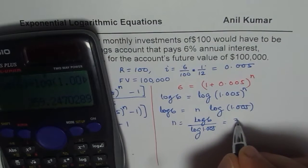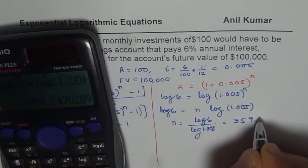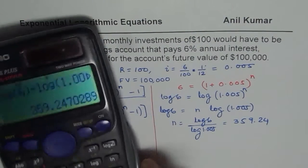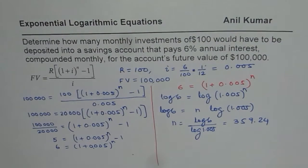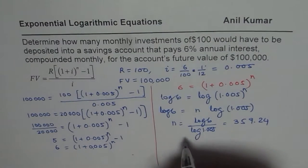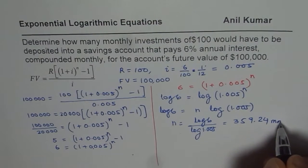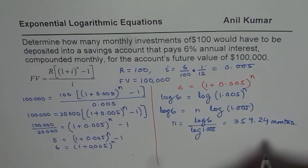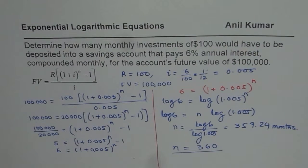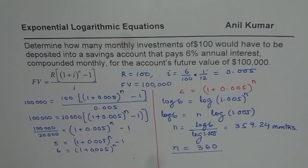So N is approximately 359.24. These are the number of months in which you have to deposit $100. You need to round your answer to the nearest whole number, so the number of deposits you need to make is 360 months to reach $100,000 in the account. Thank you and all the best.